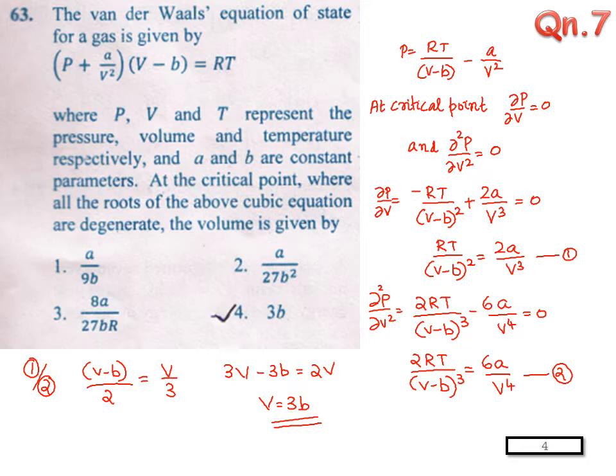Q7. The van der Waals equation of state for a gas is given by P plus A by V square into V minus B equal to RT, where P, V, T has the usual meaning and A and B are constants. At a critical point, we are asked to find the volume.